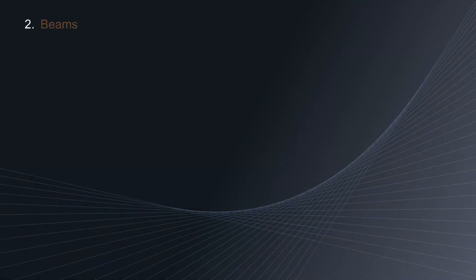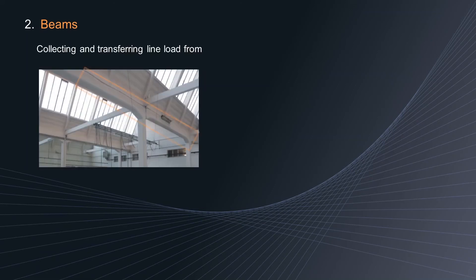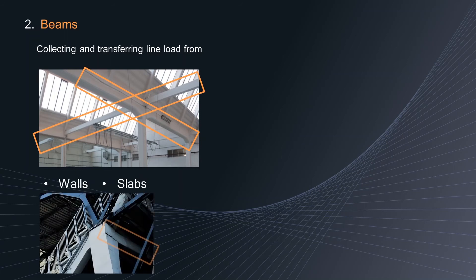Element 2: Beam. Beams are the horizontal members in a framed structure, which are capable of collecting and transferring line loads coming from roof trusses, walls, slabs, and stair landings.